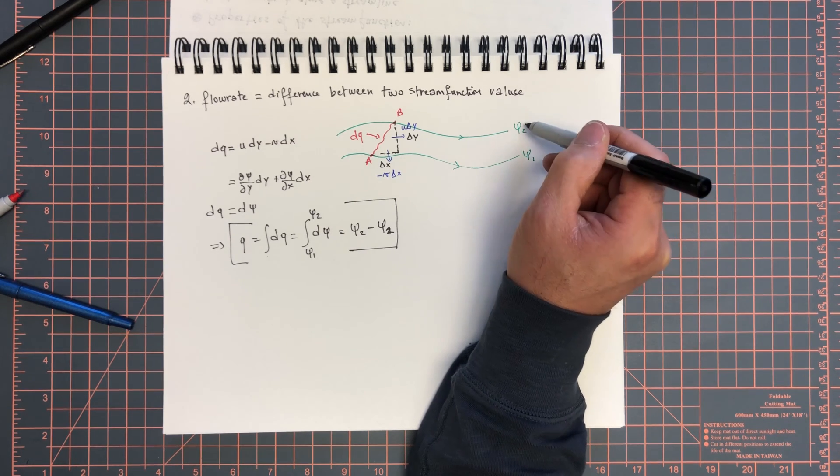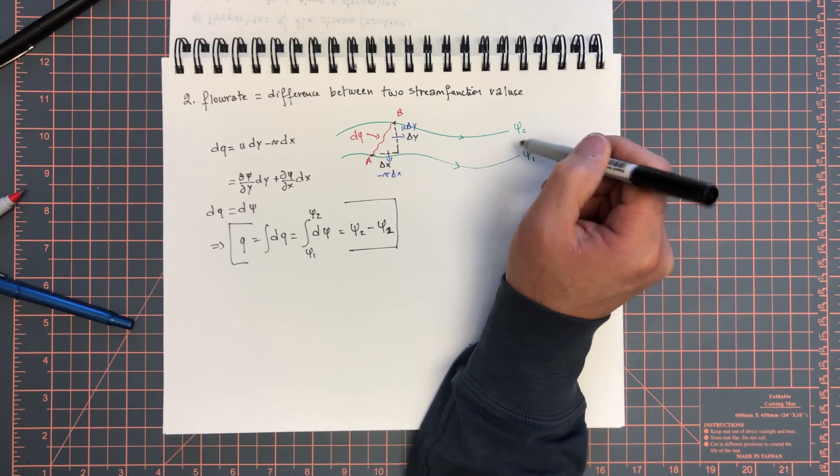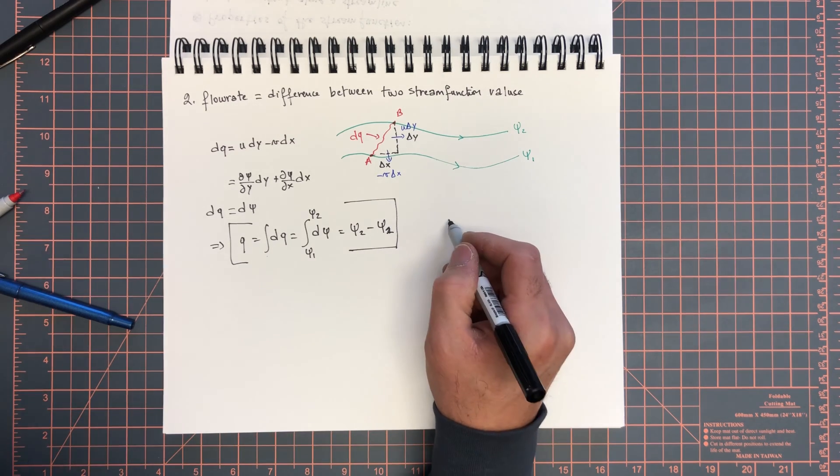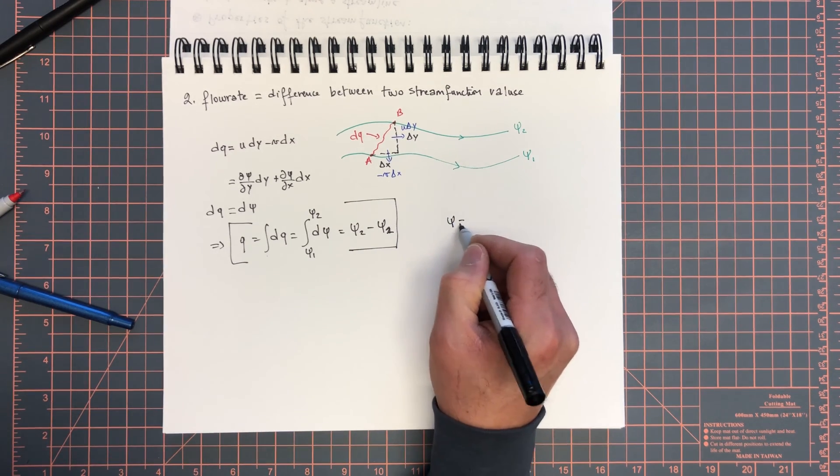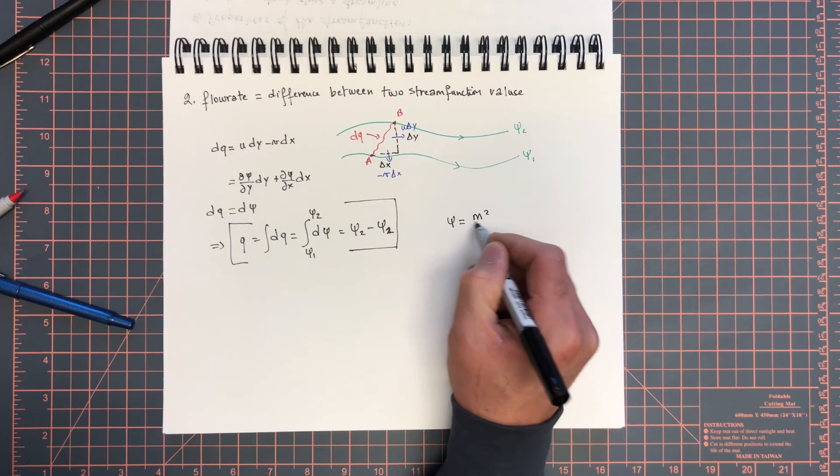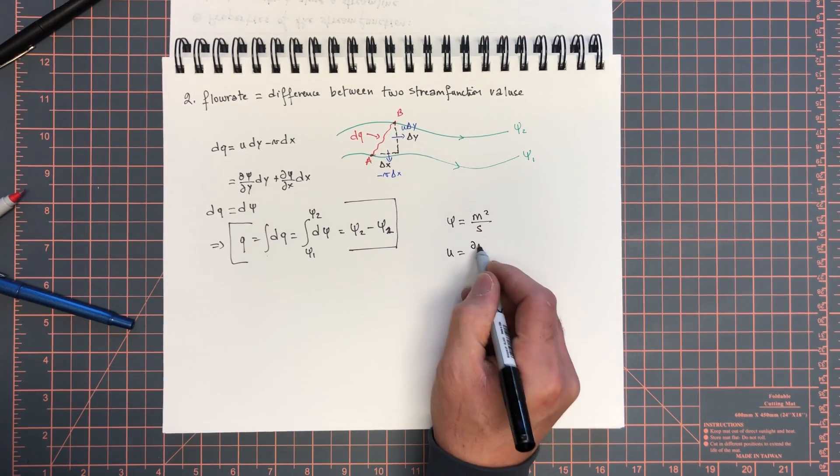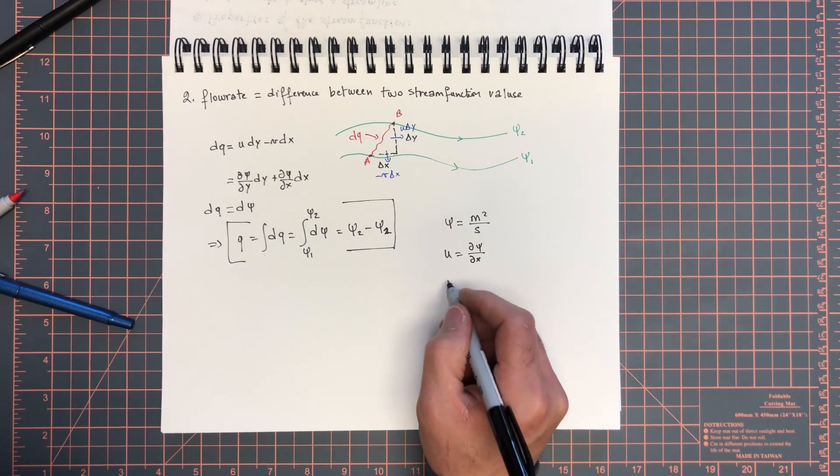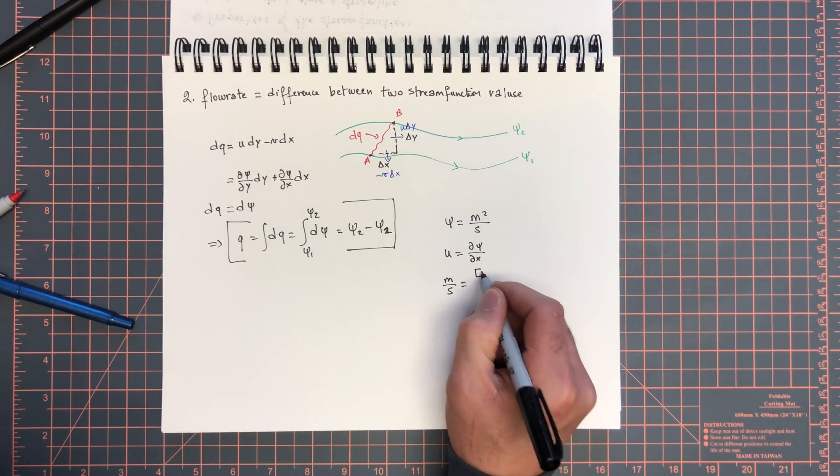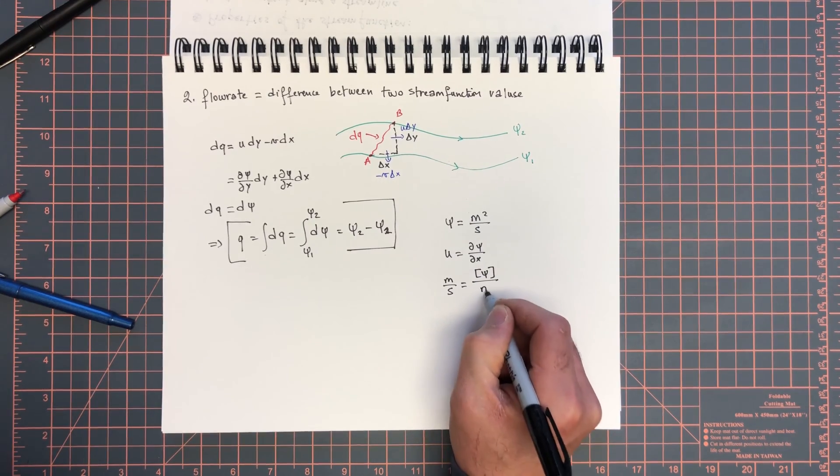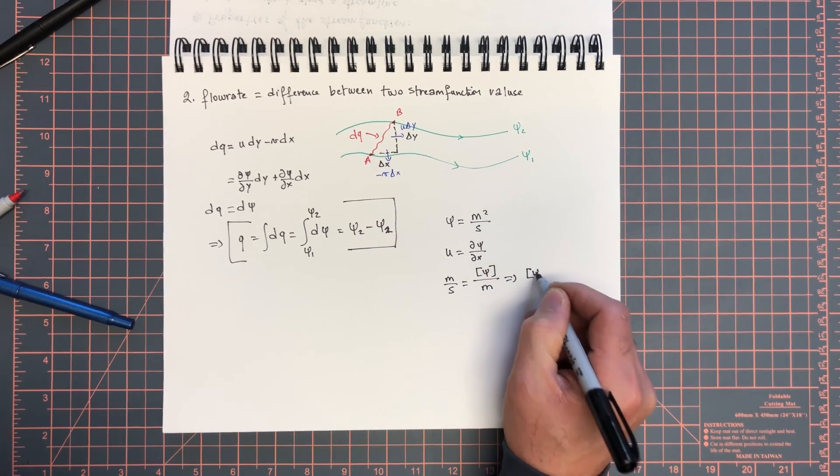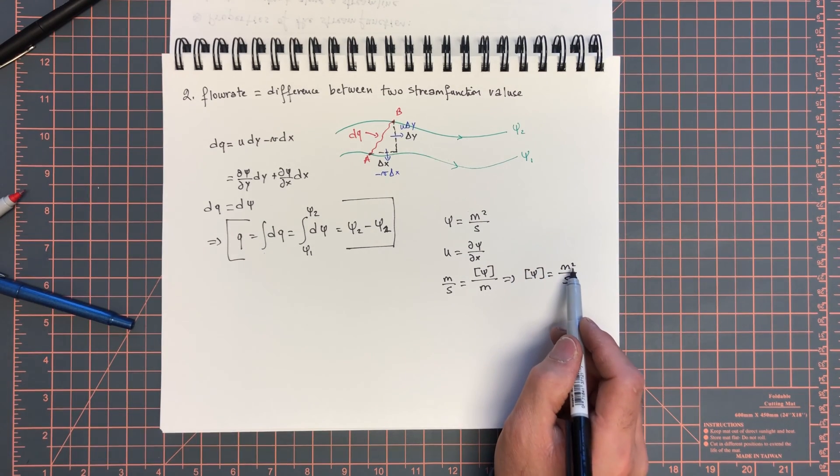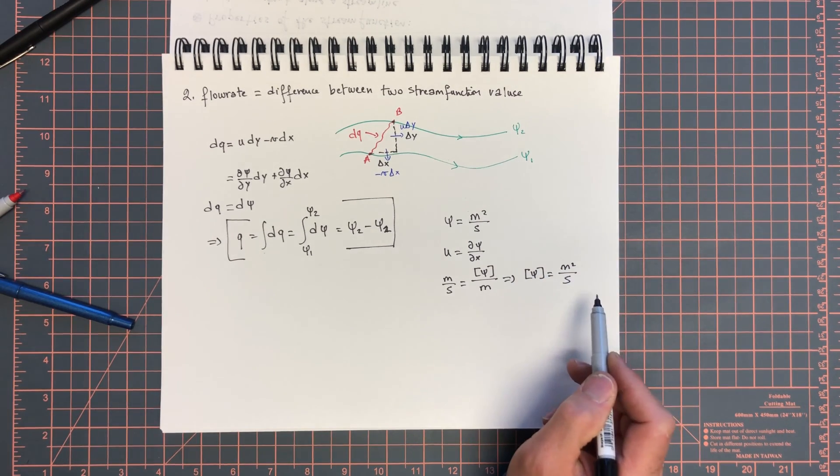That gives you the flow rate per unit length, because the units of ψ are meters squared per second. How do you get that? u is dψ/dx, so units of u (meters per second) equal units of ψ over meters, so units of ψ are meters squared per second.